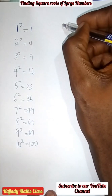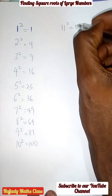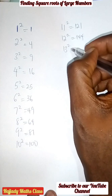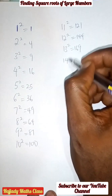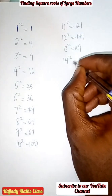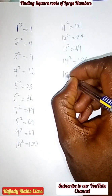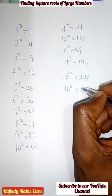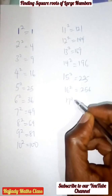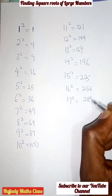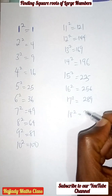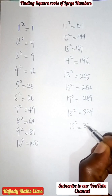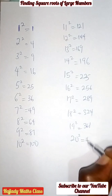By proceeding, eleven squared is one twenty-one, twelve squared is one forty-four, thirteen squared is one sixty-nine, fourteen squared gives one ninety-six, fifteen squared gives two hundred and twenty-five, sixteen squared gives two hundred and fifty-six, seventeen squared gives two hundred and eighty-nine, eighteen squared gives three twenty-four, nineteen squared equals three sixty-one, and twenty squared equals four hundred.